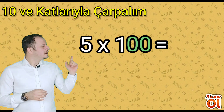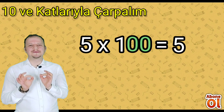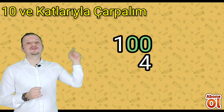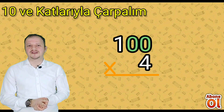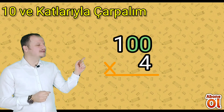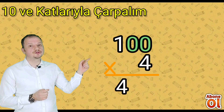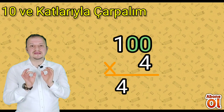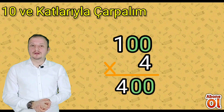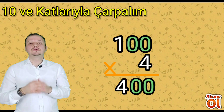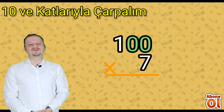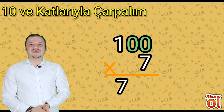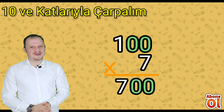Bu sefer 5 ile 100'ü çarpalım. Hemen çarpım bölümüne 5'i ekliyoruz ve 100'deki 2 tane sıfırı 5'in sağına ekliyoruz. 5 çarpı 100 eşittir 500. Şimdi de 100 ile 4'ü çarpalım. 4'ü çarpım bölümüne ekleyip 2 tane sıfırı 4'ün sağına ekliyoruz; 100 çarpı 4 eşittir 400. Bir örnek daha: 7 ile 100'ü çarpalım. 7'yi çarpım kısmına ekleyip 100'deki 2 tane sıfırı 7'nin sağına yazıyoruz; 100 çarpı 7, 700 eder.